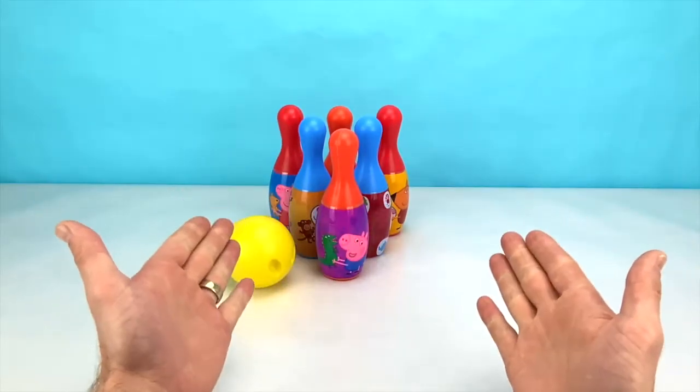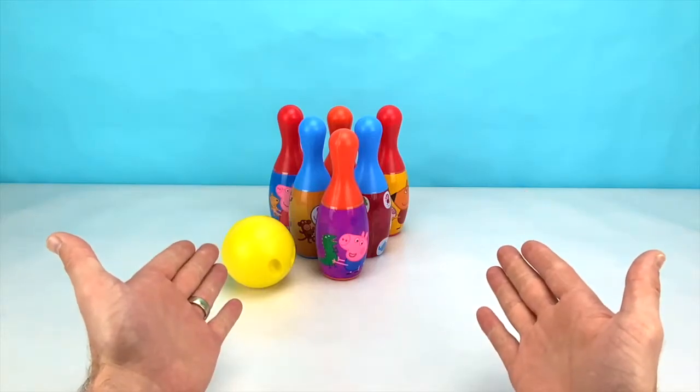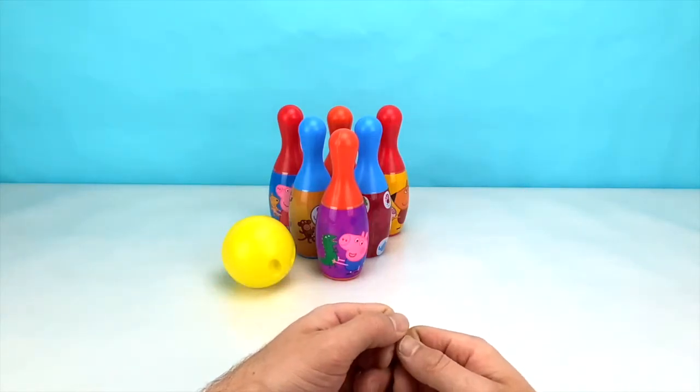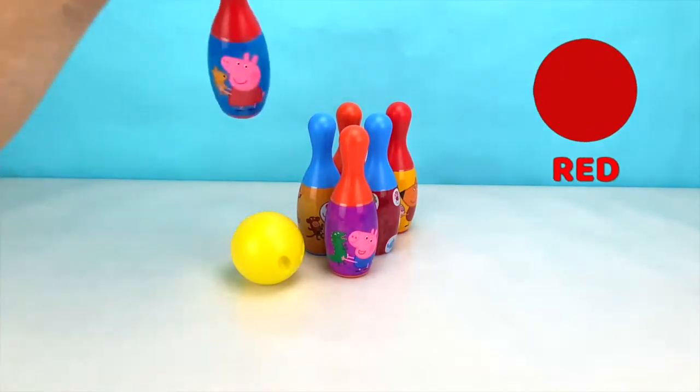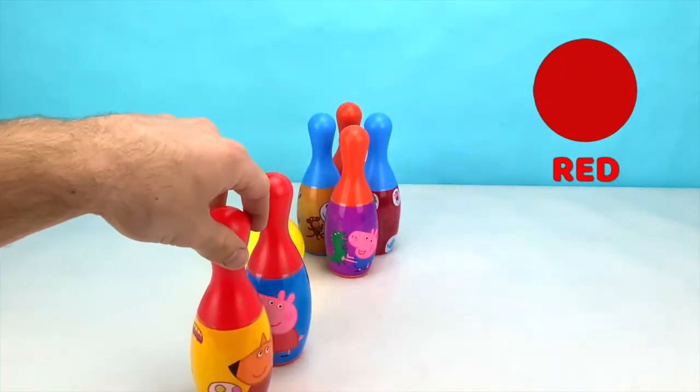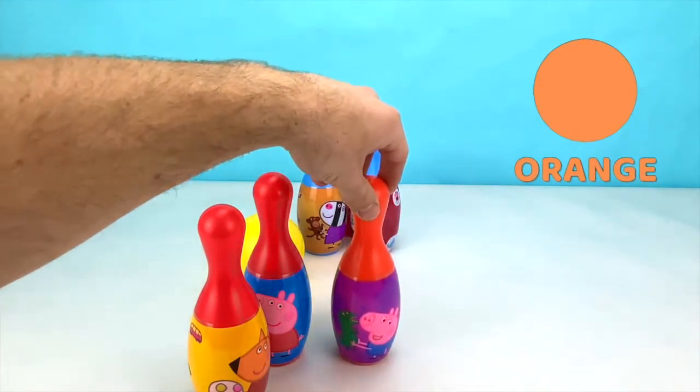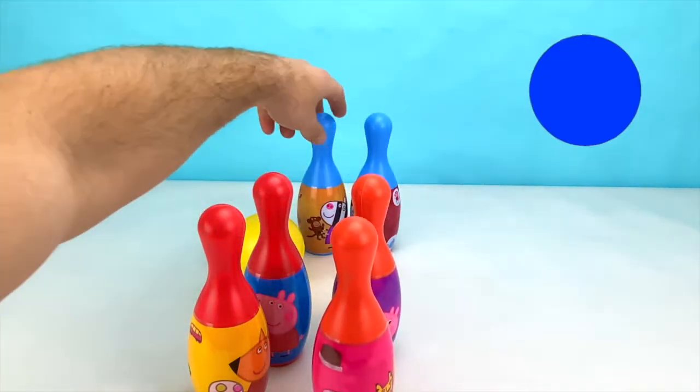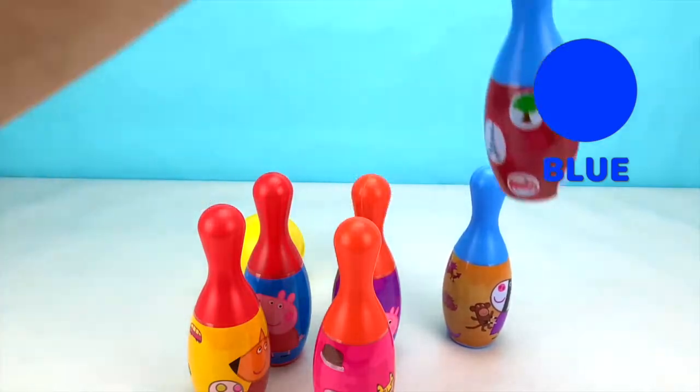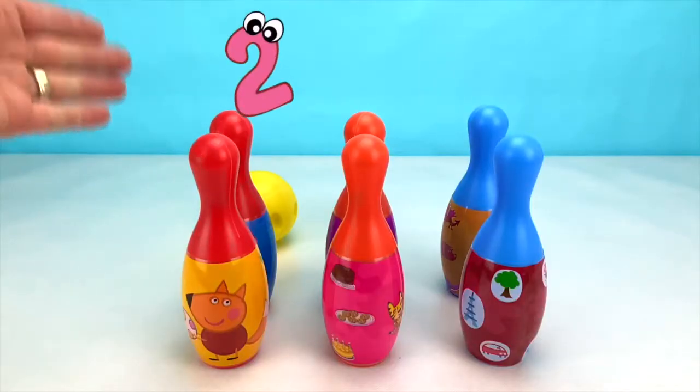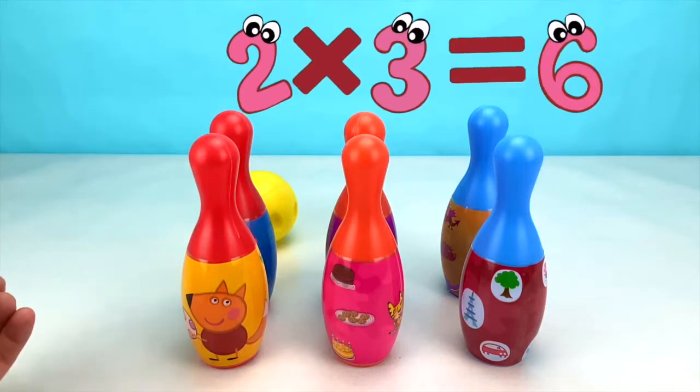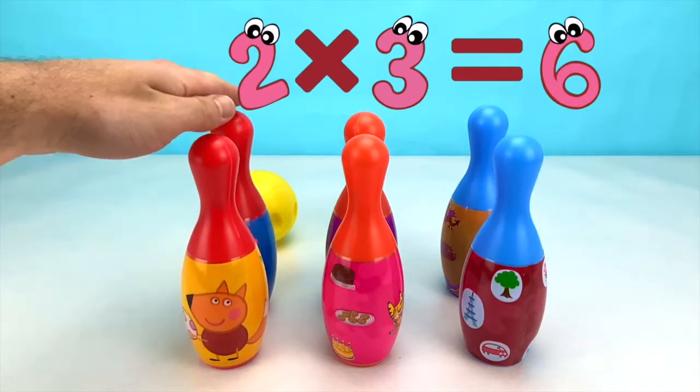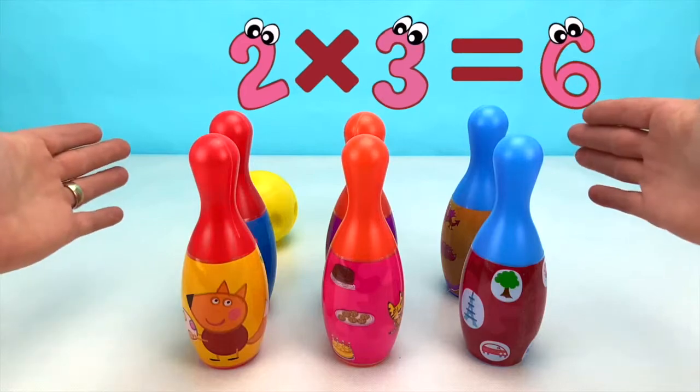Can you tell me how many of each color you see on these bowling pins? That's right! There are two of each color! We have two red pins, we have two orange pins, and two blue pins. So if we have two of each color, and we have three colors, that means we have six pins together. Two times three equals six! Yay!